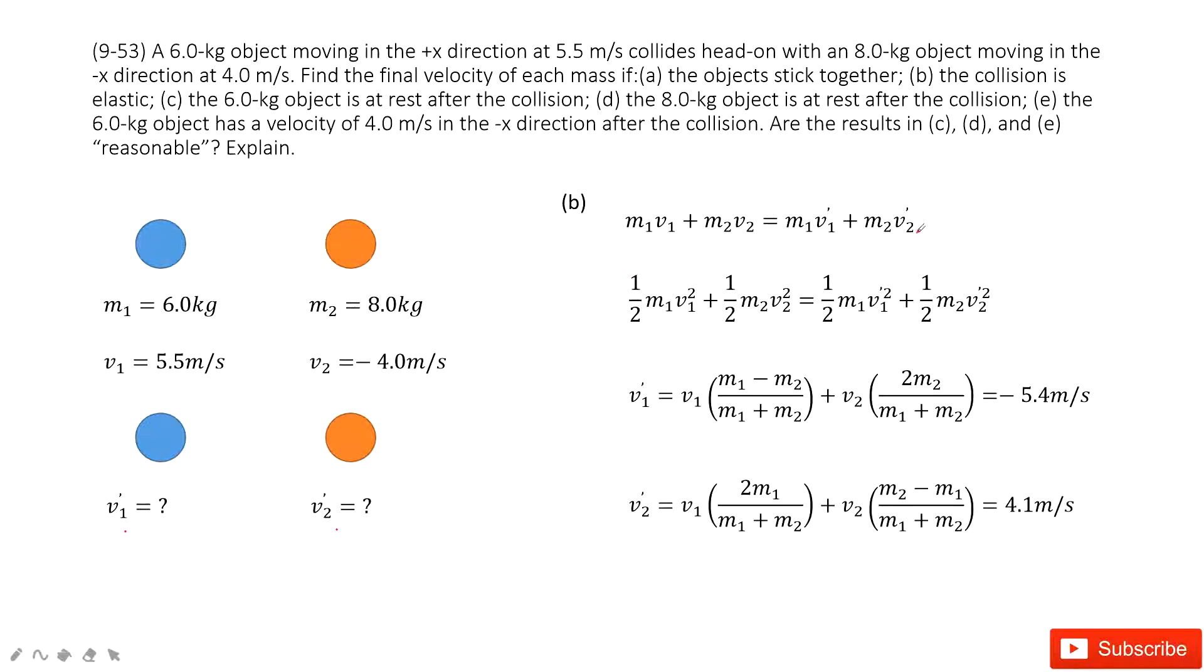we can see still momentum is conserved. Linear momentum is conserved. Initial momentum equals to the final momentum. And also because this is elastic, so that means the kinetic energy is conserved. So initial kinetic energy equal to final kinetic energy.